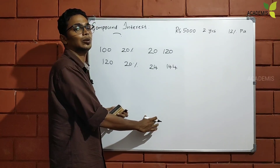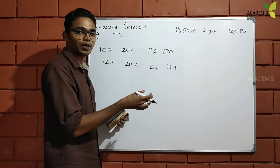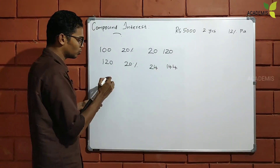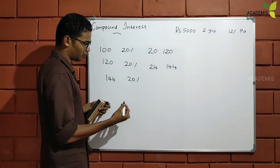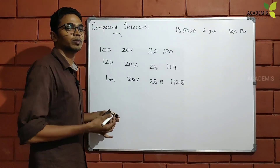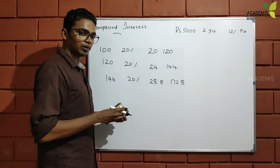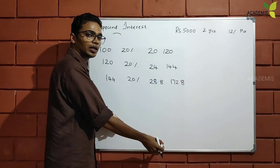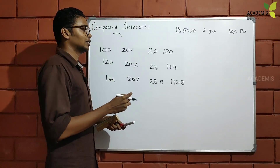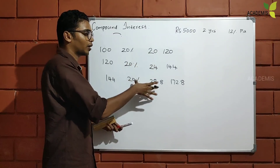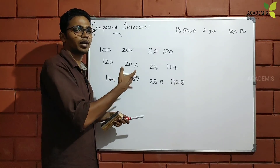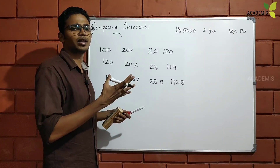In other words, we have the same interest in S.I. How do I do that? We calculate the amount. This is the first time we use one formula and the method. It's very easy — it's very simple.